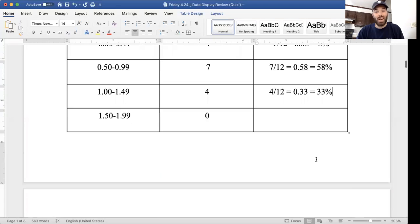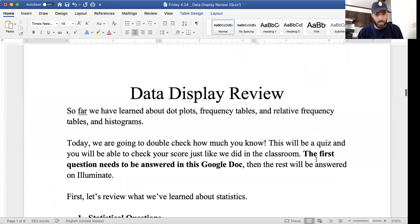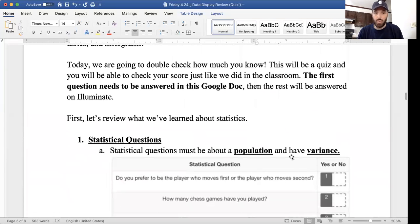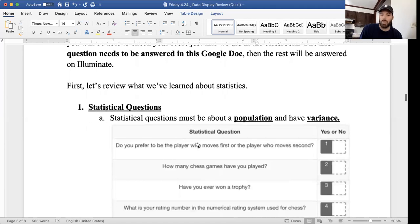Okay, so we're actually going to just review everything that we've done in statistics so far so that you're ready to go with your quiz. And then at the end of the video, I'll show you how you should log onto your quiz. First, let's review what we've learned about statistics. The first thing we went over is what is a statistical question. And we said that it has to have population and variance. Remember population means it's about more than one thing. Variance means there's more than one answer. So this first question, do you prefer to be the player who moves first or the player who moves second? That's only asking me and there's only two choices. So that does not have population or variance. That would be not a statistical question.